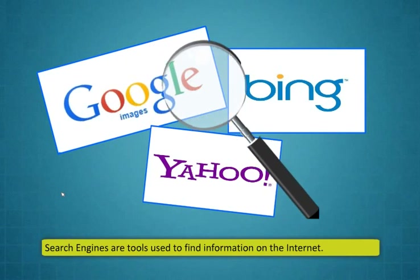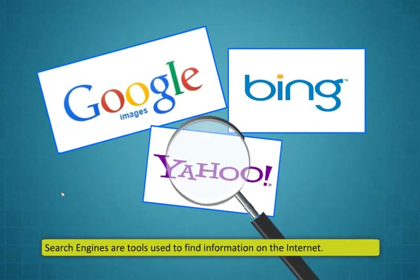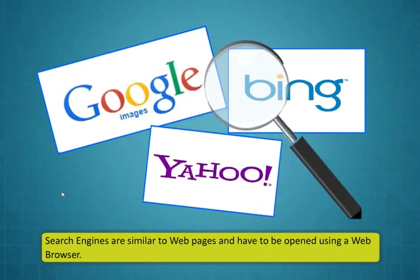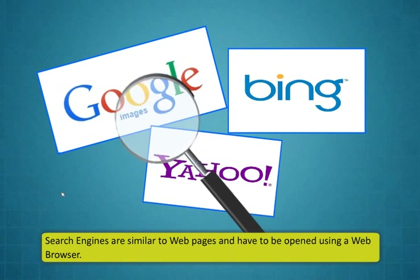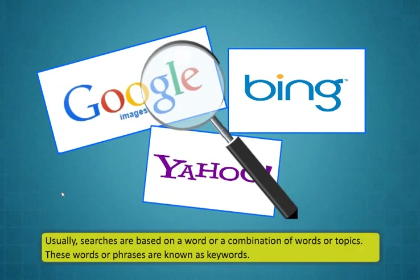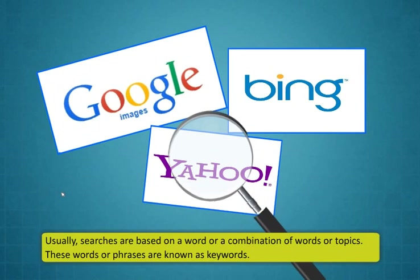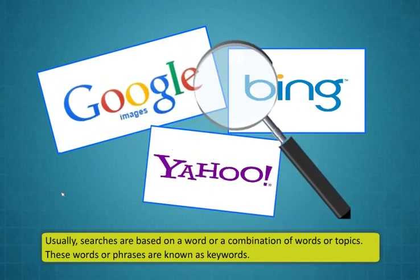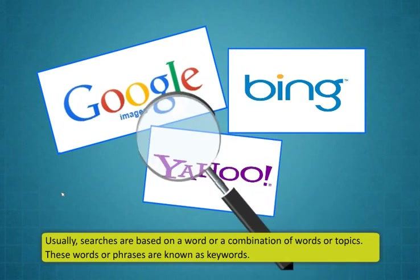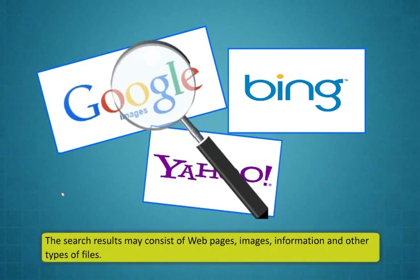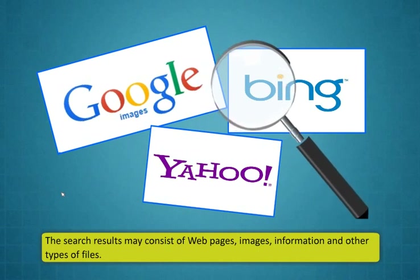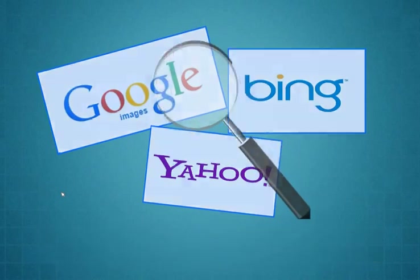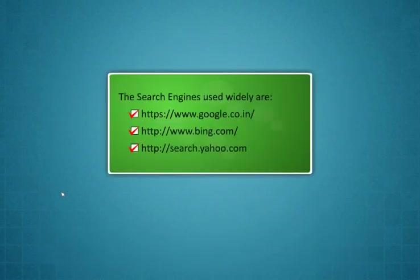Search engines are tools used to find information on the internet. Search engines are similar to web pages and have to be opened using a web browser. Usually, searches are based on a word or a combination of words or topics. These words or phrases are known as keywords. The search results may consist of web pages, images, information and other types of files.